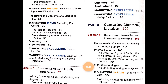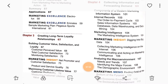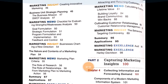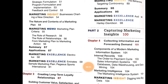Chapter 3 is Creating Long-term Loyalty Relationships, under which building customer value, satisfaction, and loyalty is taught, along with Marketing Insights and maximizing customer lifetime value. This completes the overview of Part 1 of the book written by Philip Kotler.